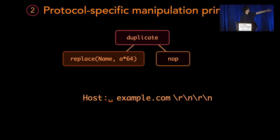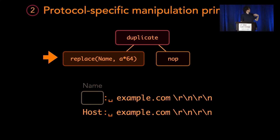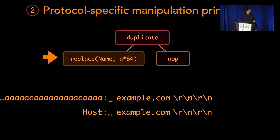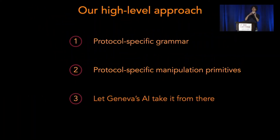Here's a quick example. First, duplicate the host header — now we have two. Next, the replace action replaces the left child of the duplicate action. Then we send out this request. Believe it or not, this evades censorship in China. A really simple strategy like this works. So we have these manipulation primitives, we compose them to make strategies, and a simple strategy like that can evade censorship.